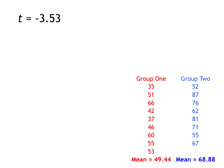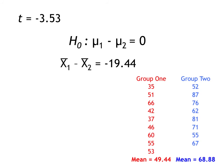So what does that mean? Our null hypothesis was that there was no difference between the means of the groups, but we got a difference. We found a difference of negative 19.44 between the two means. Our test statistic tells us that difference is 3.53 standard deviations below the hypothesized mean of zero. The critical value was 2.131 plus or minus, and our test statistic is much larger than that, so we're going to reject our null hypothesis.